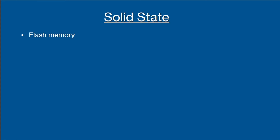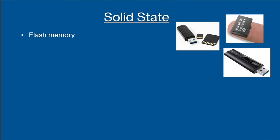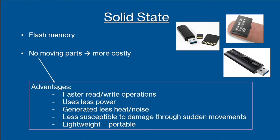The last type of secondary storage you will need to know about are solid state drives, and these come in many different forms, including USB sticks and SD cards. Solid state drives are more costly than magnetic drives because they have no moving parts. However, this also means there are many different advantages. Solid state drives have faster read and write operations, use less power, and do not generate heat or noise. They are also suitable for portable devices because they are lightweight and not susceptible to damage through sudden movements.